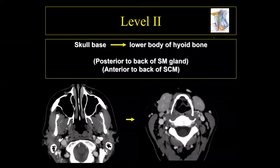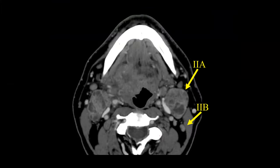Level 2 lymph nodes run from the skull base down to the level of the hyoid bone. Drawing a line connecting the back of the submandibular gland, everything posterior to this line is level 2. Level 2 is divided into 2a and 2b, defined by the presence or absence of a fat plane between the lymph nodes and the internal jugular vein. When the lymph node compresses the internal jugular vein with no fat plane, that's 2a; a large fat plane between the lymph node and the vein indicates 2b.